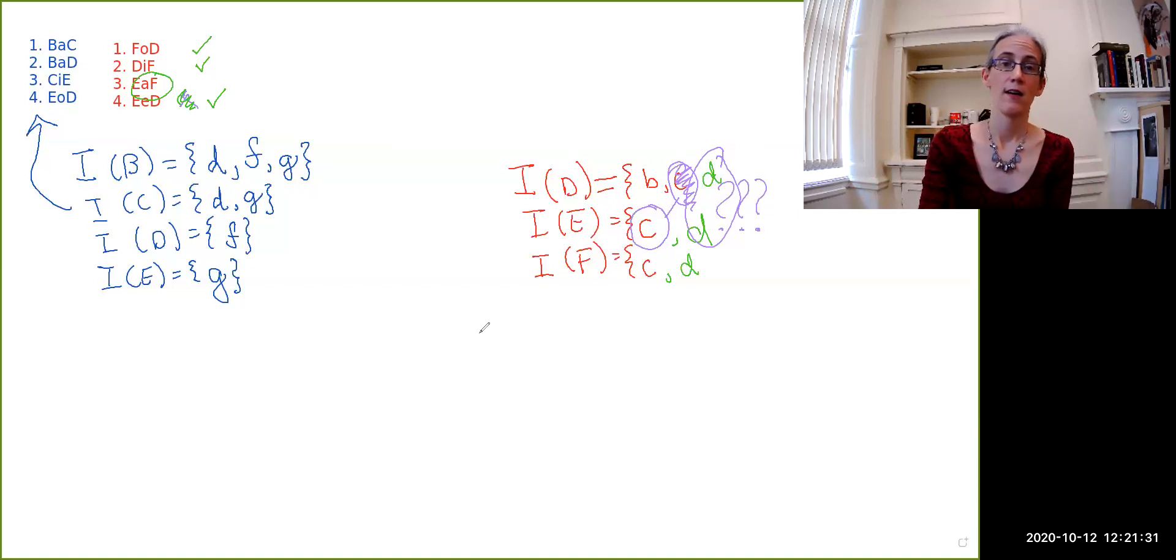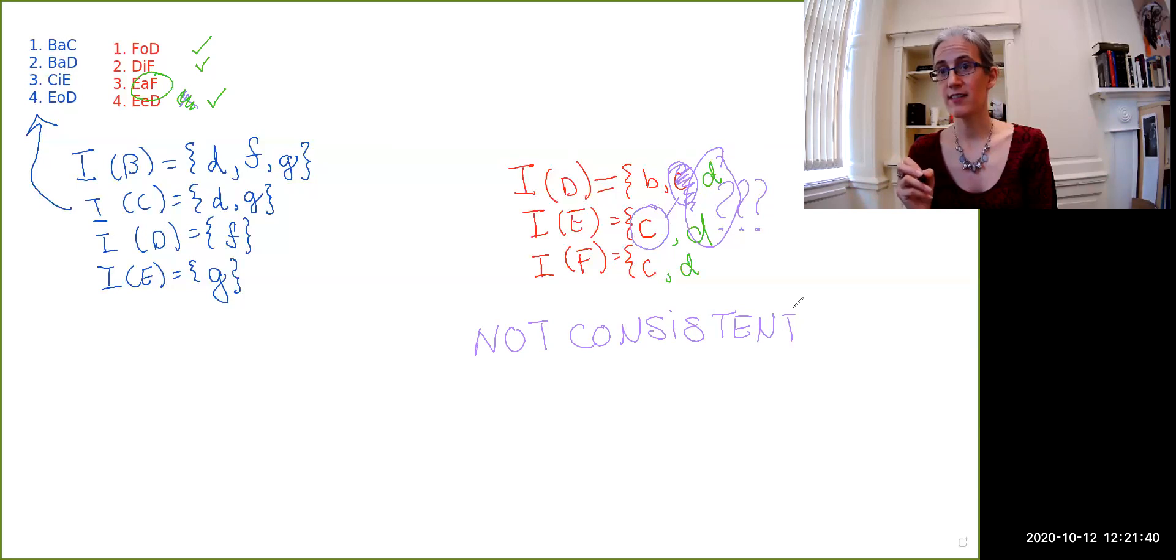So this is, to use the technical term, not a consistent set. You cannot construct an interpretation that makes all of these propositions true together.